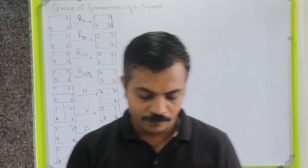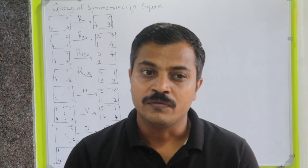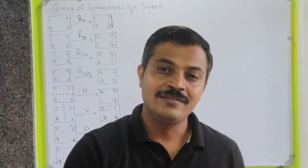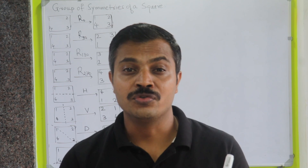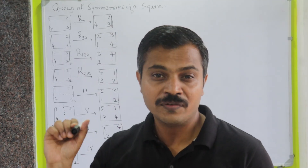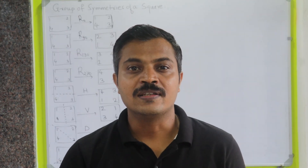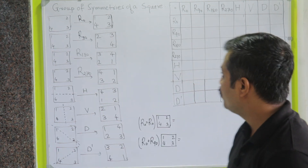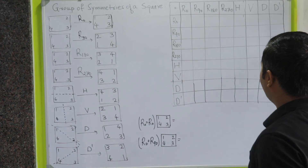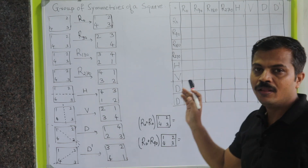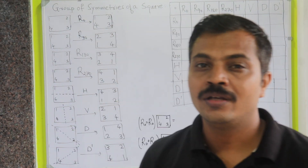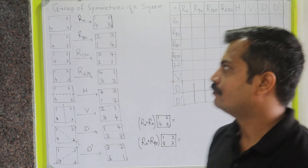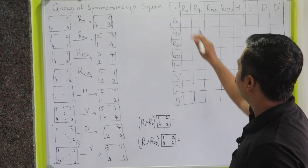Now, in order to show this set of symmetries forms a group, we are going to use a composition table. By completing that composition table we will show that the symmetries of a square form a group with respect to composition of functions. These symmetries are all functions.